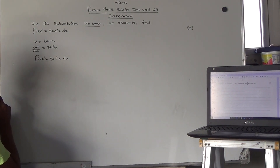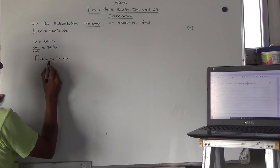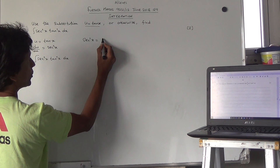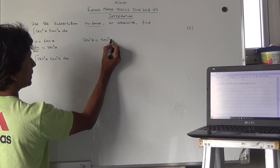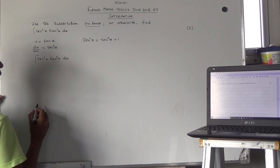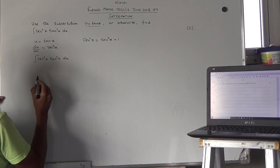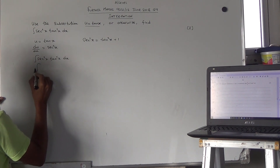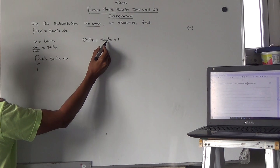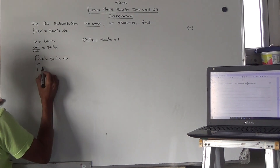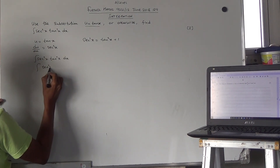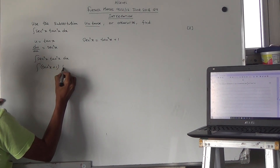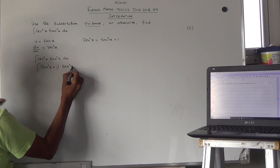Another thing I would like to draw your attention to is that sec²x is also equal to tan²x + 1. Therefore we're going to substitute sec²x for this, because that is equal to tan²x + 1, then multiply by tan²x.